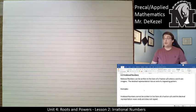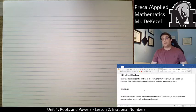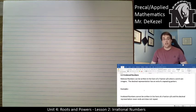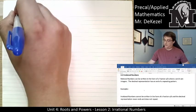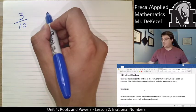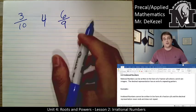Let's check out our document. Rational numbers can be written in the form of a fraction a over b, where a and b are integers, and the decimal representation either ends or has a repeating pattern. Any number that can be written as a fraction, or a decimal that stops or repeats on your calculator, is a rational number. Examples include 3 over 10 and 4.